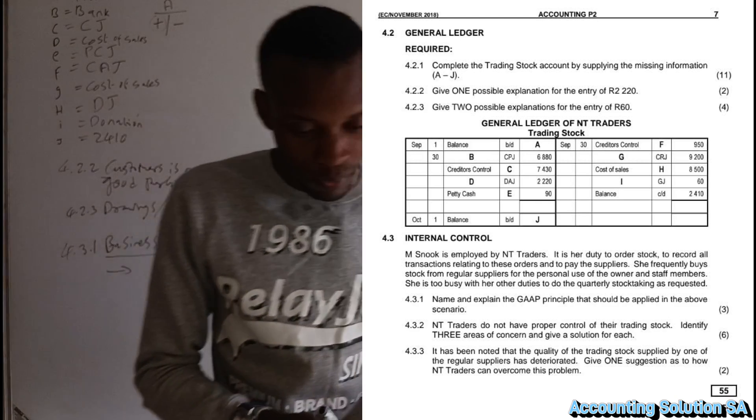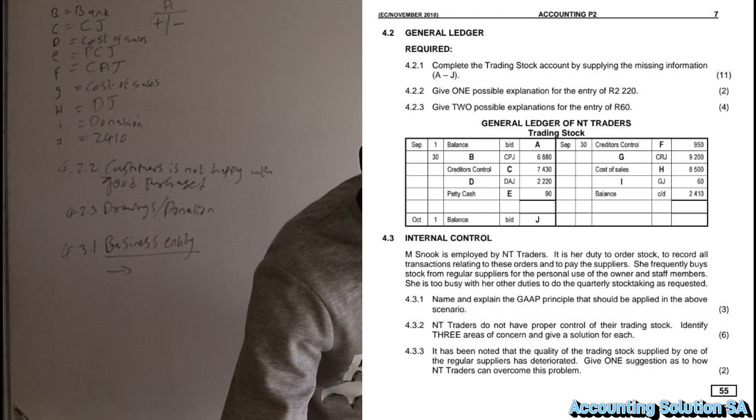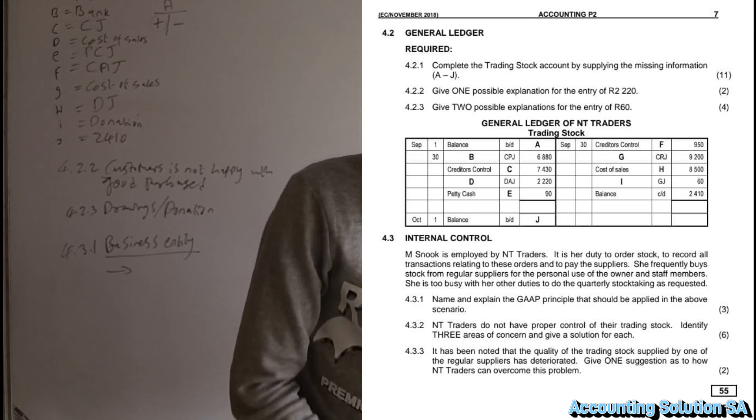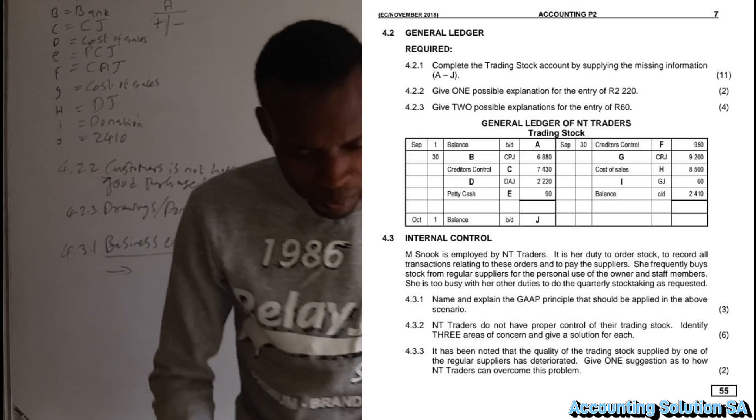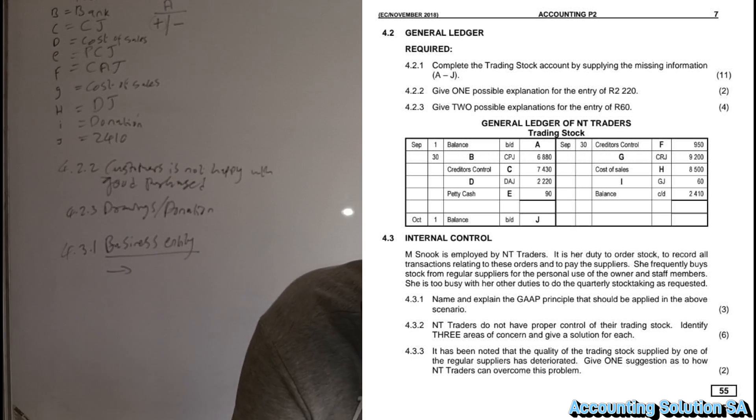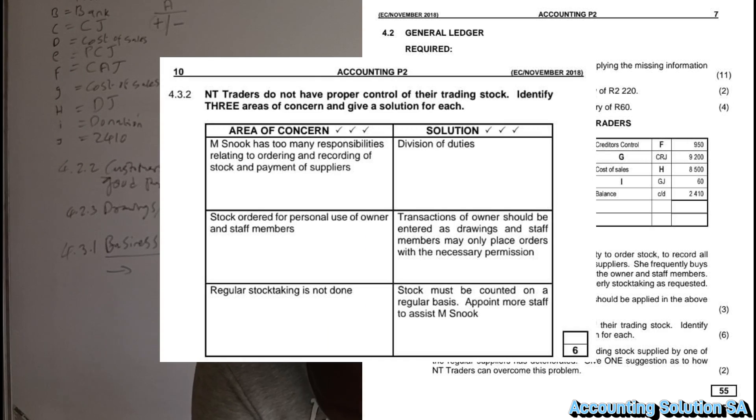Then the other question: NT traders does not have a proper control of their trading stock. Identify three areas of concern and give the solution for each. Number one is that M-Snog has many responsibilities related to ordering and recording stock and payment of suppliers. Then the solution is division of duty. Another concern is that the stock ordered for personal use of the owner and staff members.